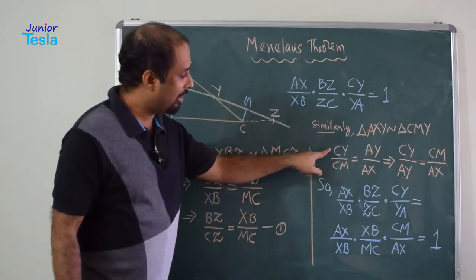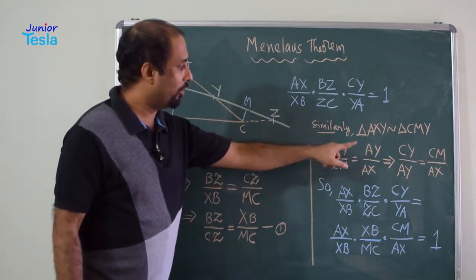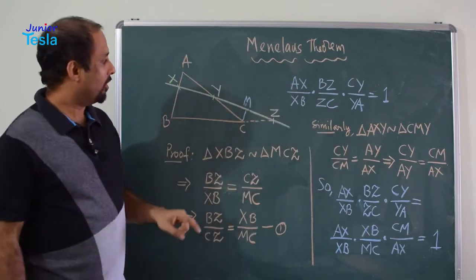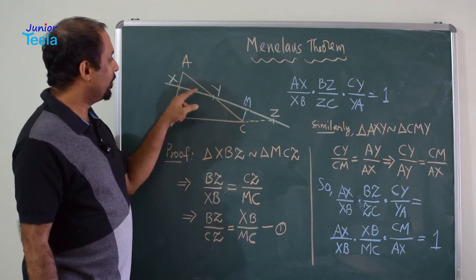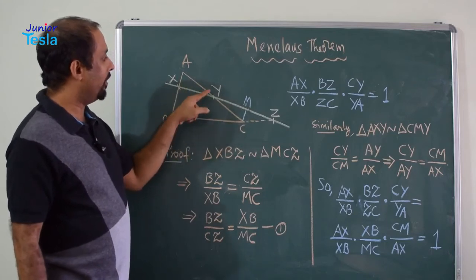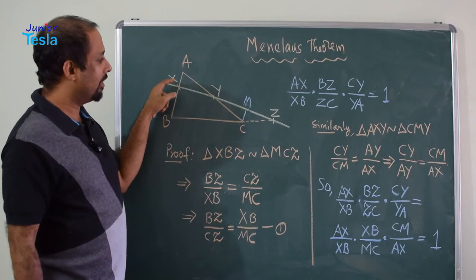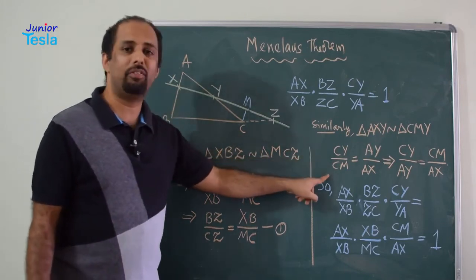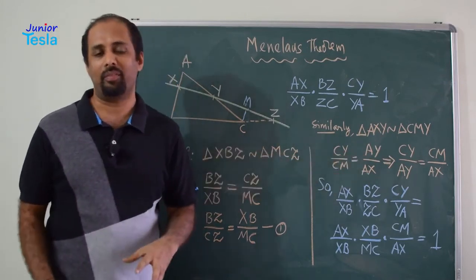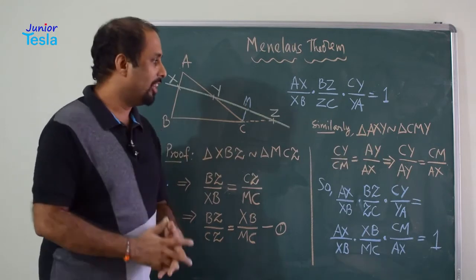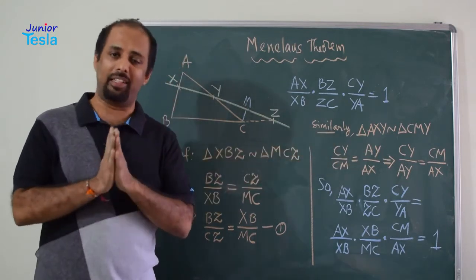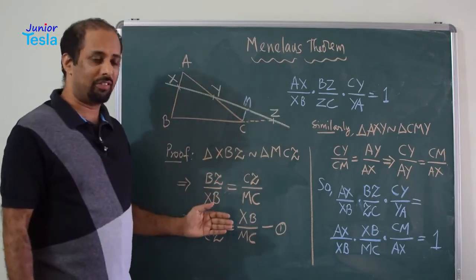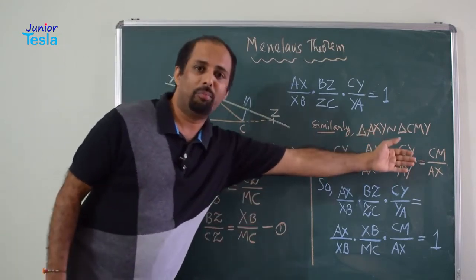Let us write some ratios again. So, I am going to write CY by CM is equal to AY by AX. CY divided by CM is equal to, now CY corresponding side is AY and CM corresponding side is AX. So, that is why CY by CM is equal to AY by AX. Now, again, let us rearrange. So, CY divided by AY is equal to CM divided by AX. So, we got two proportions, proportion number one, proportion number two.